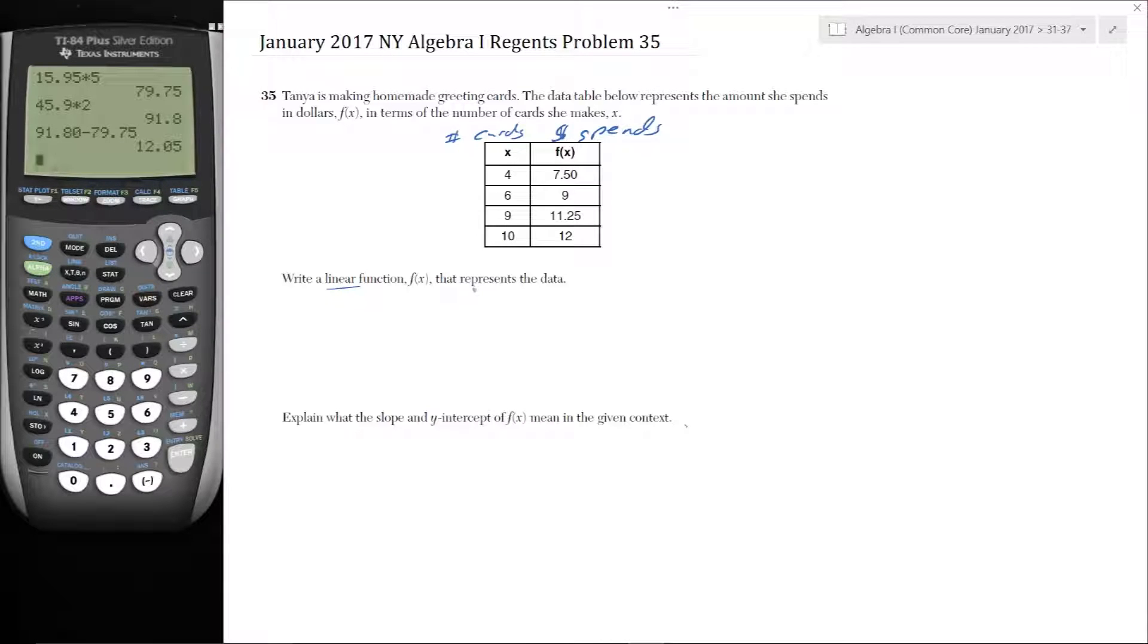We know that the function is linear, so F of X is equal to M X plus B. So in this case, let's say F of 4 is equal to M times 4 plus B, which equals 7.50. And F of 6 is equal to M times 6 plus B, and that's equal to 9.